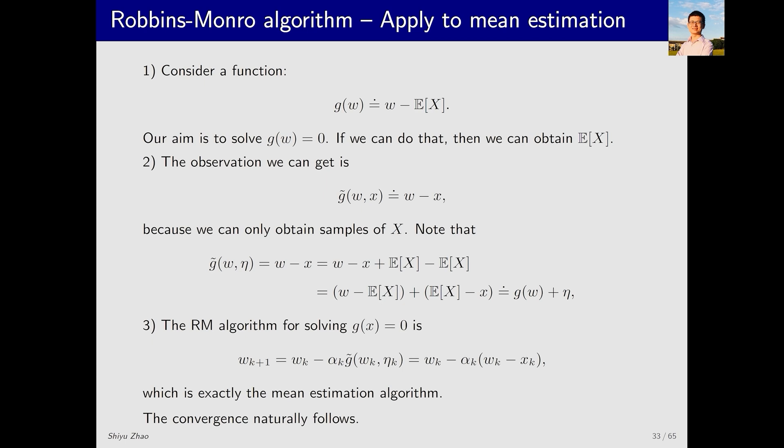So, what is the corresponding RM algorithm? The RM algorithm is this. Substituting the specific value of g tilde gives us w_k minus x_k. This is the mean estimation algorithm we previously described.